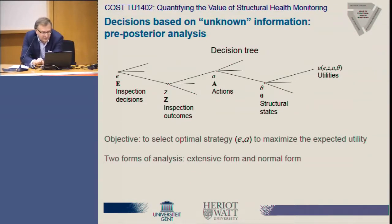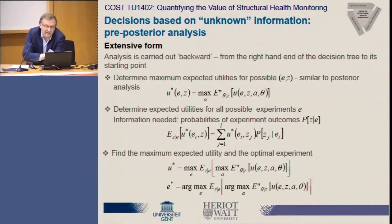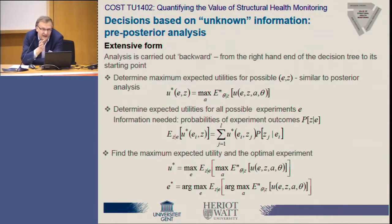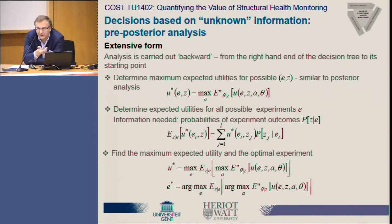Pre-posterior analysis can be done in two forms: extensive form and normal form. The extensive form of analysis starts with the assumption that the inspection and its outcome are unknown. It is essentially a backward analysis — we start from the right end of the decision tree and go back to its starting point, assuming the experiment or inspection and its outcome are unknown, which reduces the problem to posterior analysis.